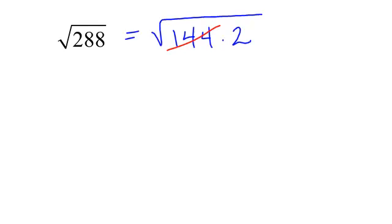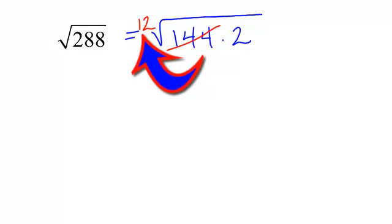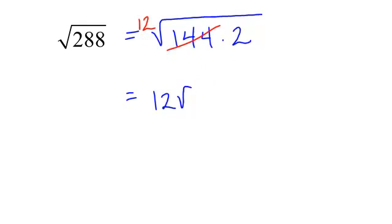144 is perfect of 12. So, when it comes out from underneath the radical, it will just be 12, because 12 times 12 is 144. My answer is 12, radical 2.